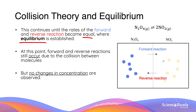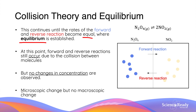Since the forward and reverse reactions occur at the same rate at equilibrium, you will not observe any changes in the concentrations of N2O4 or NO2. In a dynamic equilibrium there is still microscopic change — molecules still move back and forth between reactants and products — but there is no macroscopic change, meaning the overall concentrations of each reactant and product remain constant.